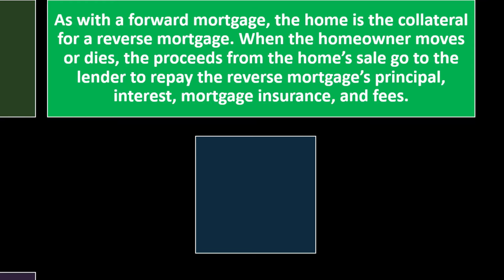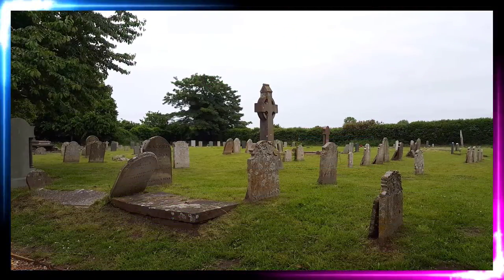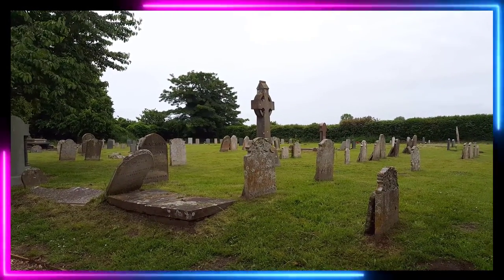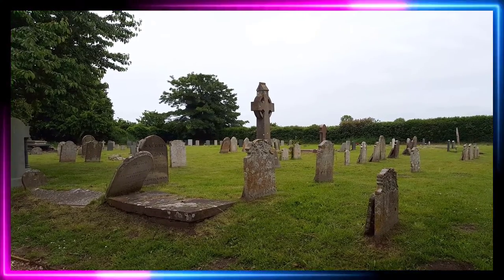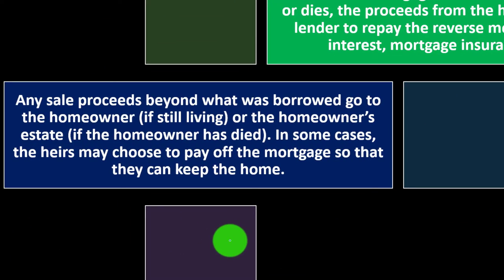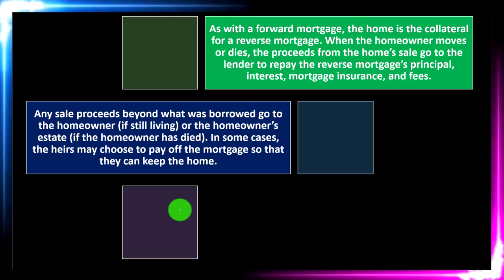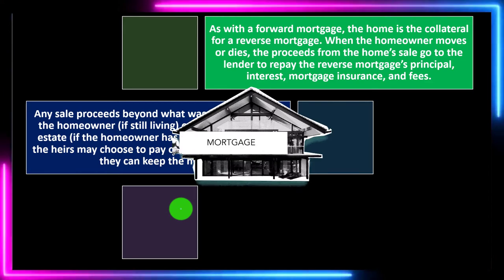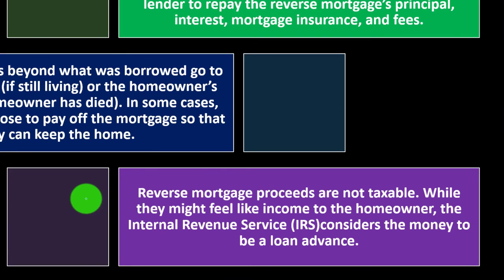When the homeowner moves or dies, the proceeds from the home sale go to the lender to repay the reverse mortgage principal, interest, mortgage insurance, and fees. Any sale proceeds beyond what was borrowed go to the homeowner or the homeowner's estate. If the homeowner has died, in some cases heirs may choose to pay off the mortgage to keep the home. Reverse mortgage proceeds are not taxable — the IRS considers the money to be a loan advance.